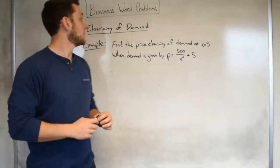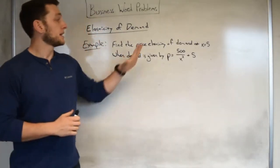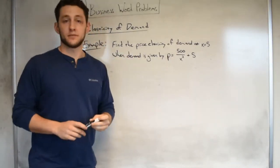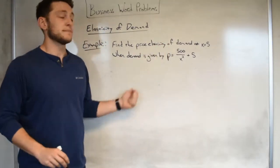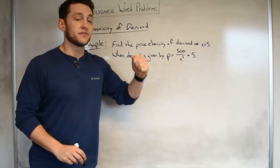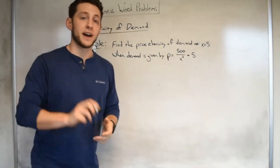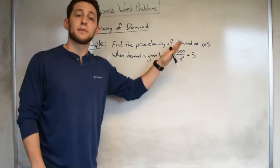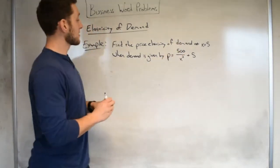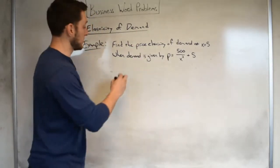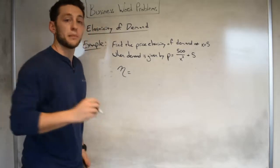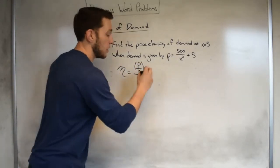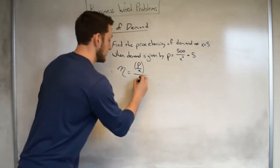This will be actually how we determine what the price elasticity of demand is at a given number of units x. Let's go ahead and try an example of finding the price elasticity of demand when given a certain situation. For an example, find the price elasticity of demand at x equals 5 units when demand is given by p equals 500 divided by x squared plus 5. Recall that when we have something like this, x is the number of units and p is the price. Since we're finding the price elasticity of demand, what we need to do is find eta. Remember that eta was equal to p divided by x, all divided by dp over dx.